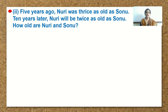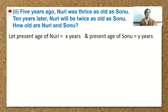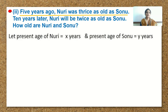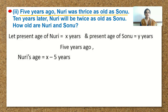We will consider the present age of Nuri as x and the present age of Sonu as y years. If you read it carefully, it is given that 5 years ago — that means before 5 years. If the present age is x, before 5 years the age would be x minus 5. So, 5 years ago, Nuri's age is x minus 5 years and Sonu's age is y minus 5 years.